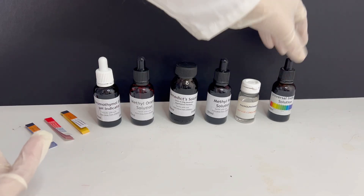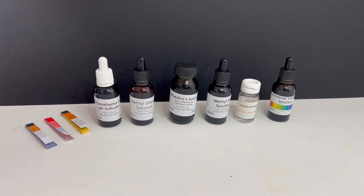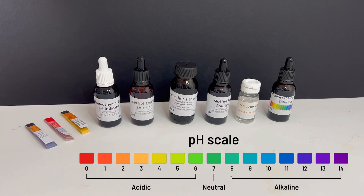Indicators are colour-changing chemicals that tell us whether a substance is acidic, neutral, or basic. The pH scale runs from 0 to 14. Different indicators work best over different pH ranges, which is why scientists choose them carefully for each experiment. Next time you are in a lab, look closely at the colour changes — they tell a story about the chemistry happening right before your eyes.